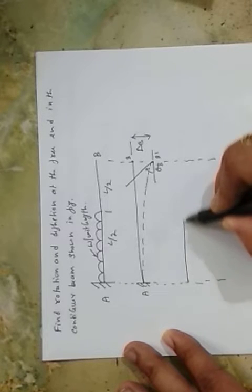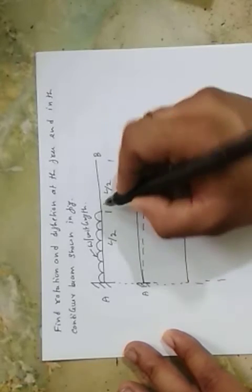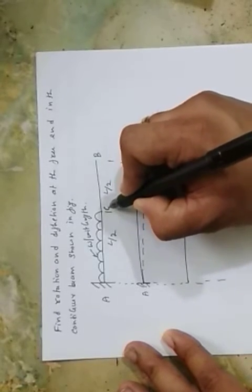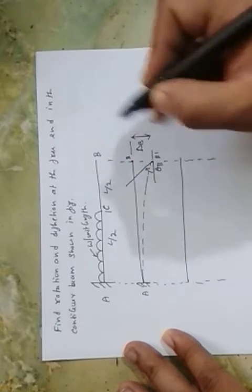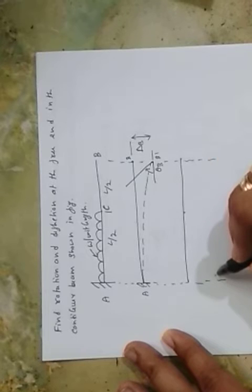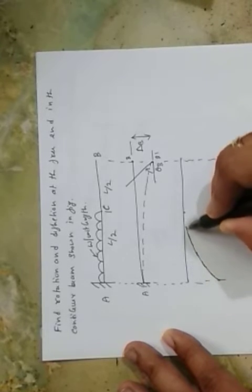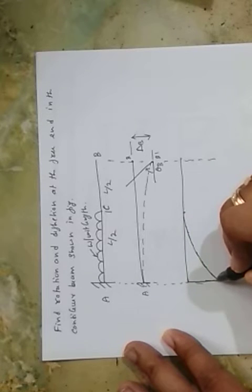So let's draw the bending moment diagram. See, there is no load in the region I call this one as C. So in the region C to B, there is no load, so the bending moment from C to B is zero. It varies as a reverse parabola from the region C to A. This is the bending moment, and this length is L by 2.